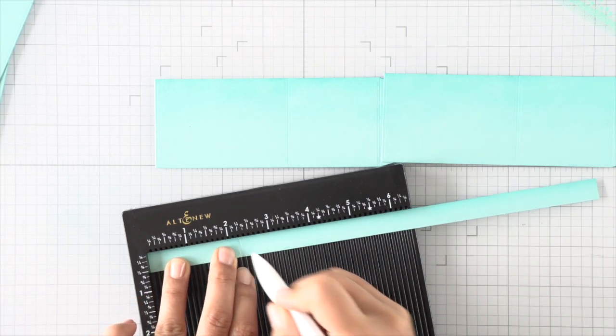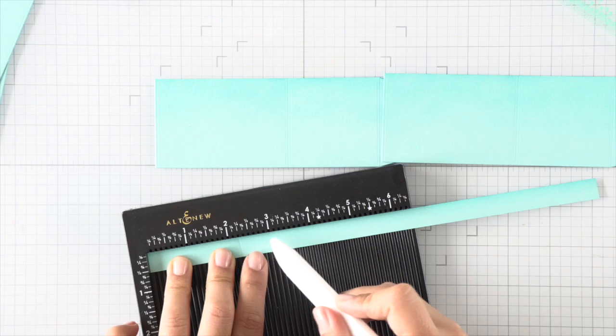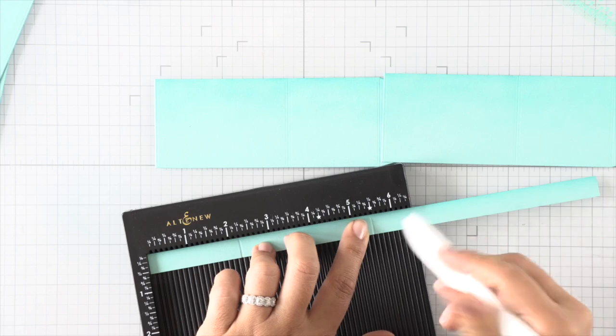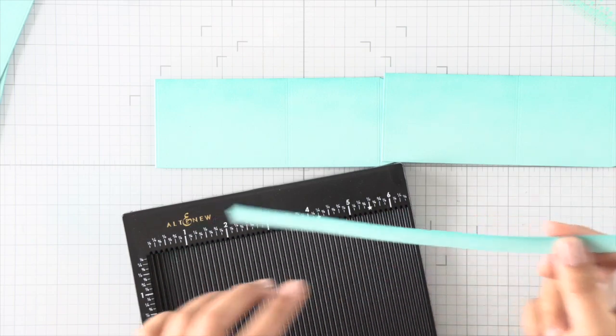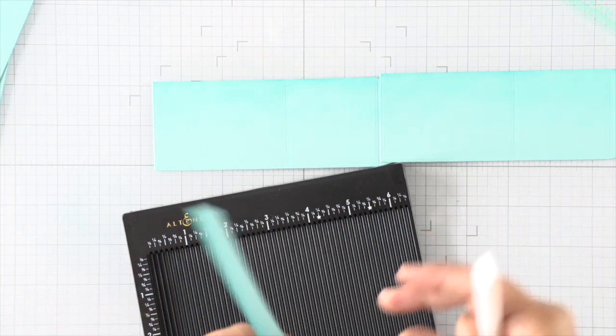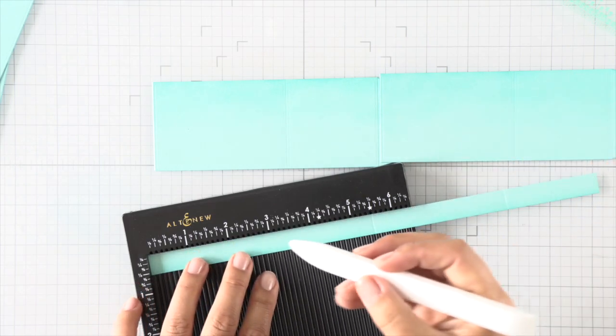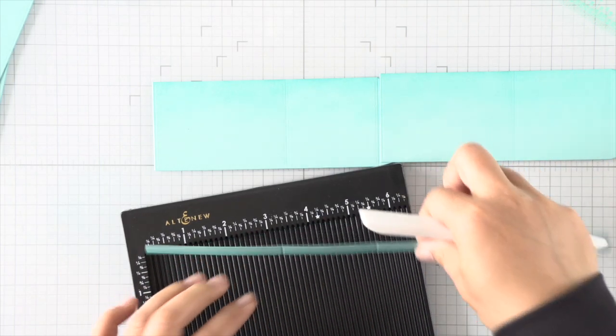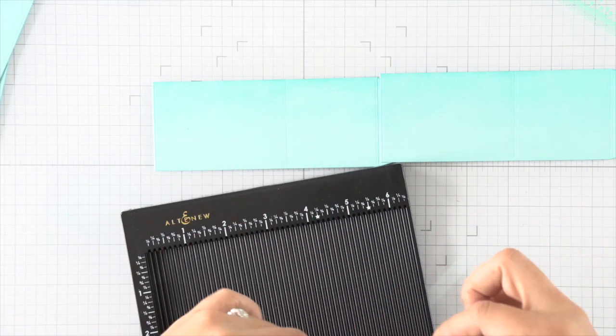Wherever the lip ends, it's gonna be in the back of the box. I hope that makes sense. Then I'll flip that and score it at 2¼ on the other end, and that should match all the way around. I hope that's not too confusing, but it'll all make sense when we put the box together in a little bit.